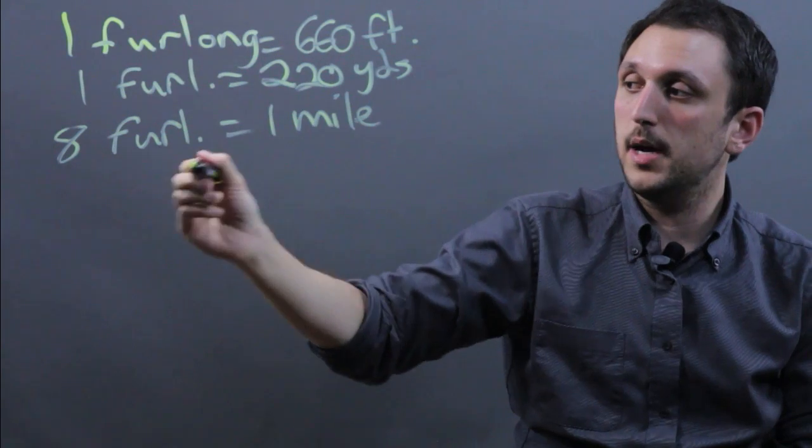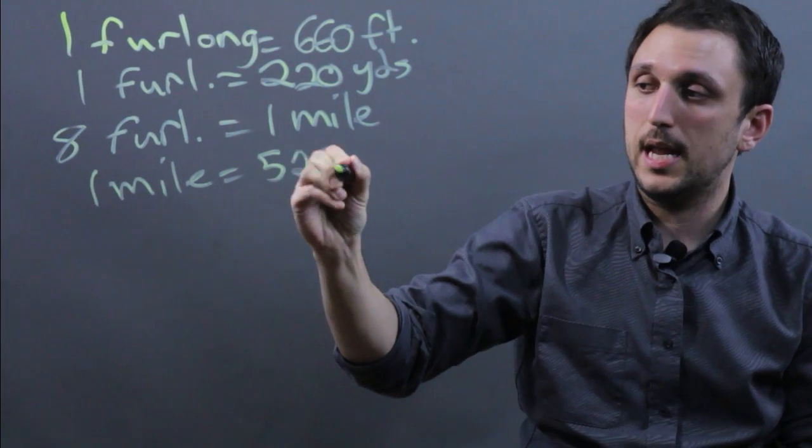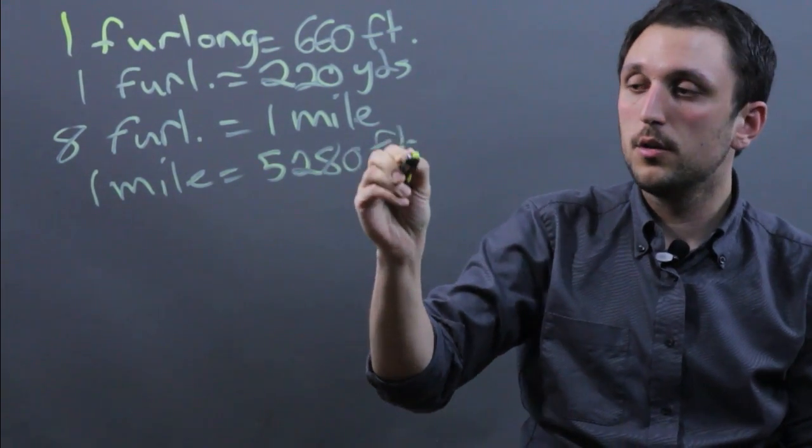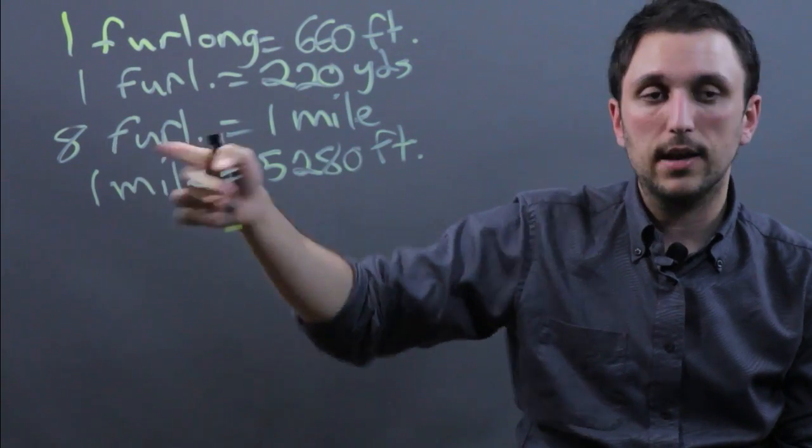So one mile is like saying 5,280 feet, and if you took 5,280 and divided by 660 you would get eight furlongs.